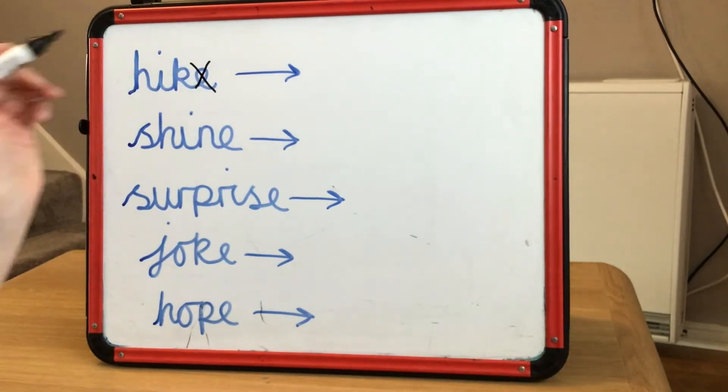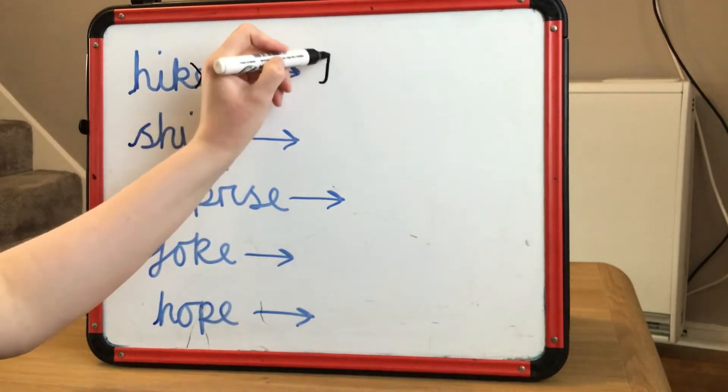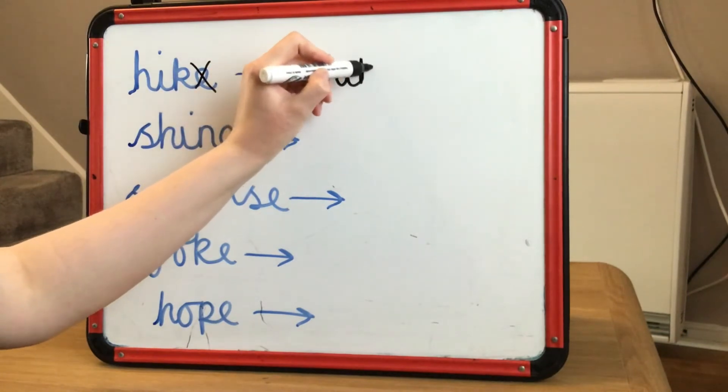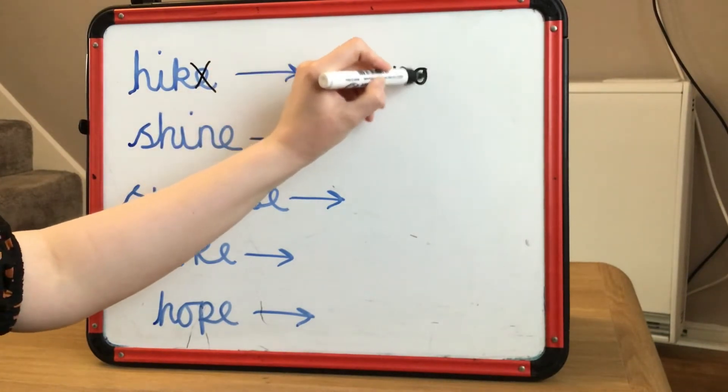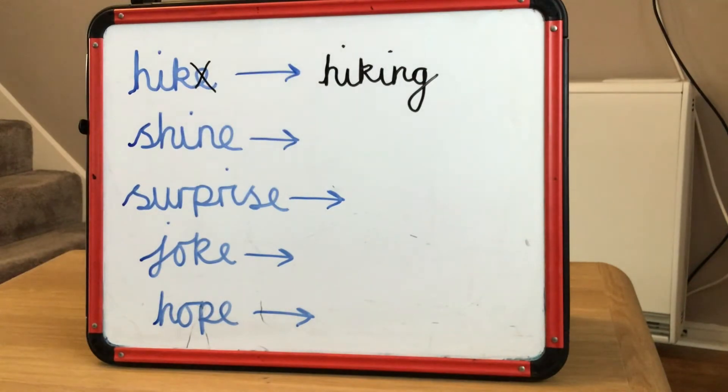So hike will become hiking. You've taken off the e and added '-ing'.